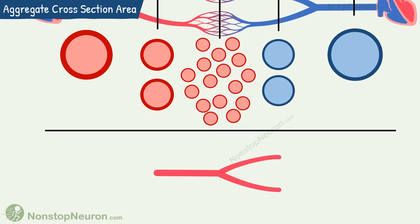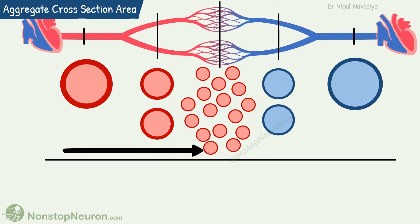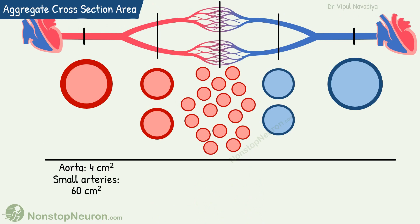In general, whenever a blood vessel branches, the combined cross-section area of daughter vessels exceeds the cross-section area of the parent vessel. So as the arteries branch into subsequent levels, the aggregate cross-section area increases. The cross-section area of the aorta is about 4 cm², the cross-section area of all small arteries combined is 60 cm², and that of arterioles is about 140 cm². At the capillary level, the aggregate cross-section area is about 2,800 cm².